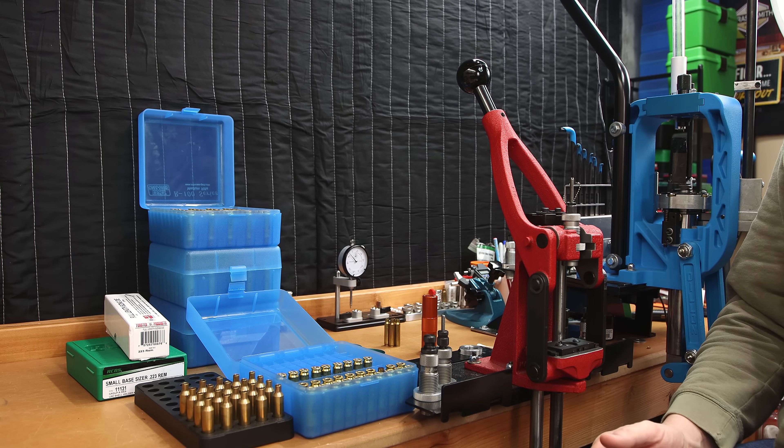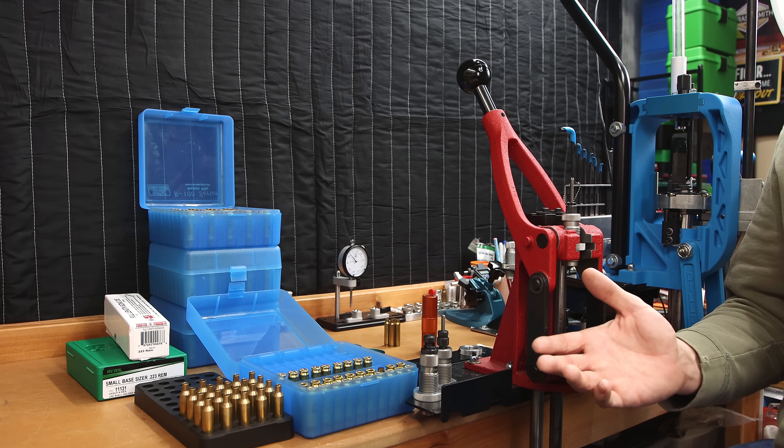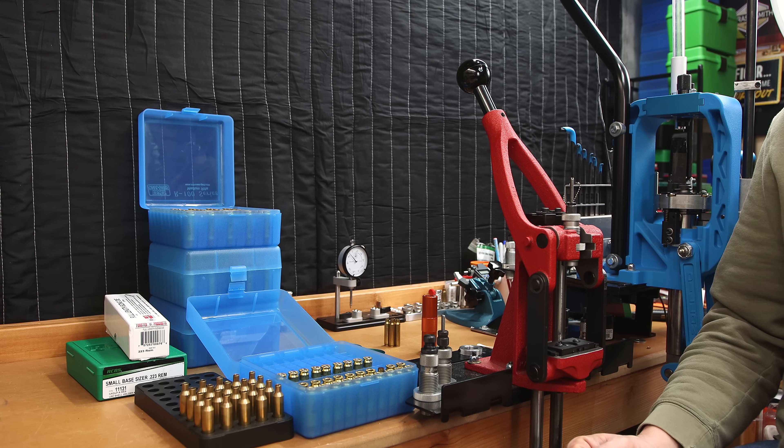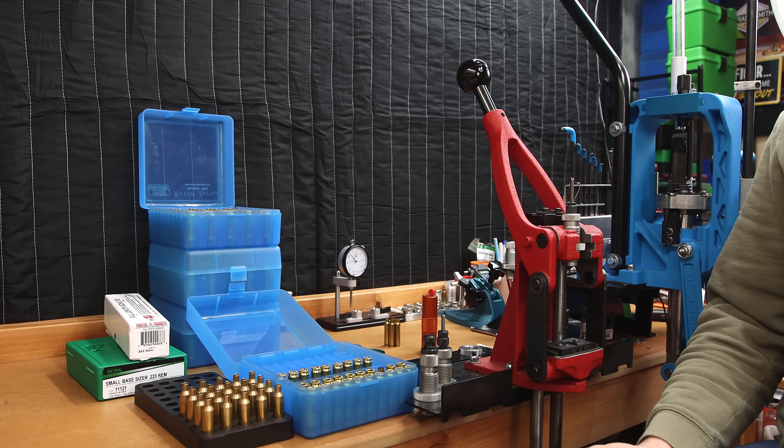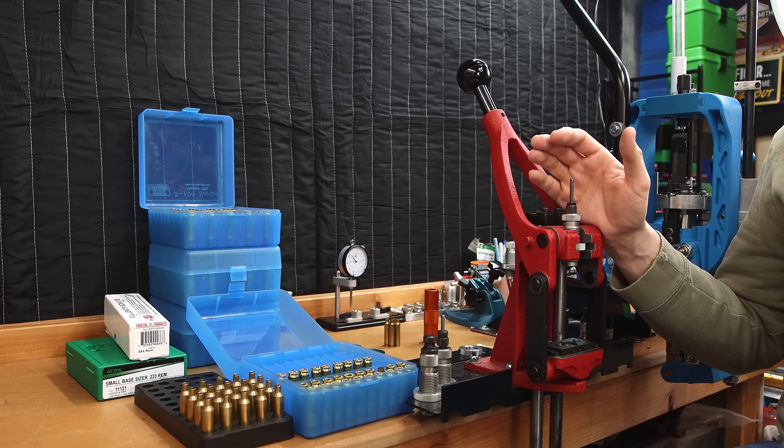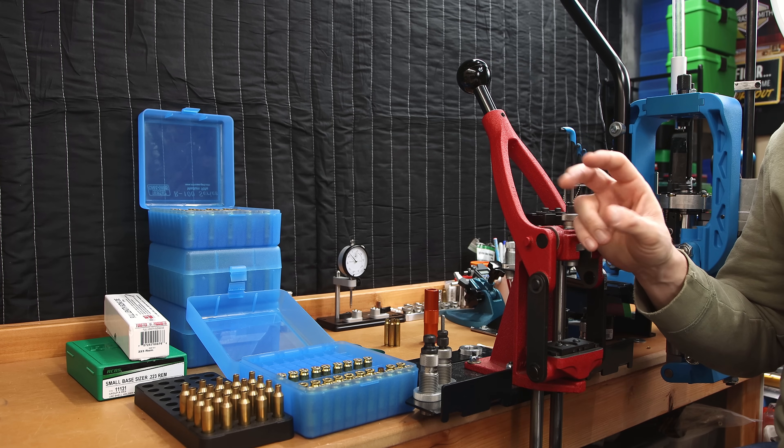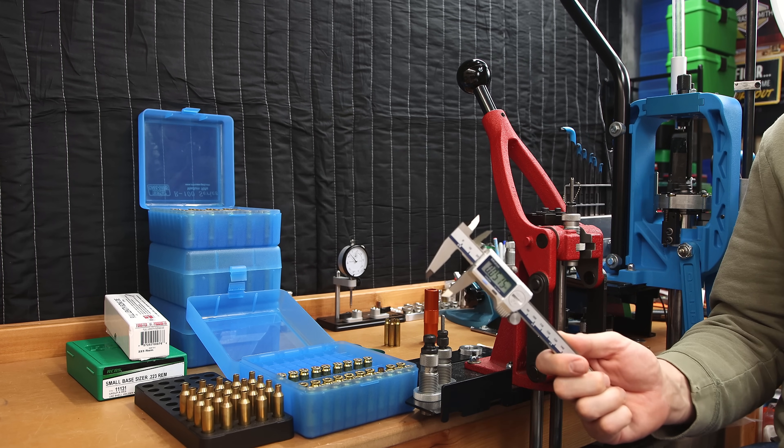For something like a semi auto, you might want to make that number three thousandths because you may be prioritizing function over accuracy. If we're being honest though, I'm not sure one thousandth is going to make a huge difference. This is the choice that the reloader has to make, not some guy with a YouTube channel. When talking about this 2 thousandths bump, one thing that's popped up recently is how do I know my cases are fully expanded to my chamber? Like anything else when it comes to reloading, measure it.